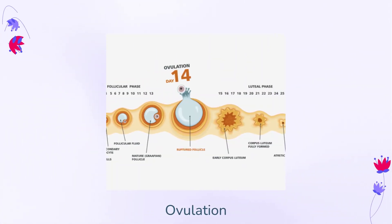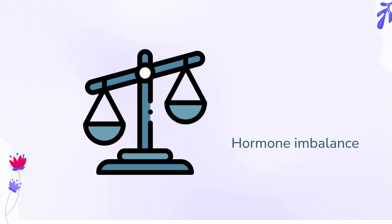Ovulation only happens one time during your menstrual cycle. The egg that your ovary releases at ovulation has the potential to be fertilized by sperm and create a pregnancy. Anovulation often happens due to a hormone imbalance. Since multiple hormones contribute to ovulation, there can be many causes of anovulation. Because ovulation is critical to pregnancy, anovulation is a common cause of infertility.